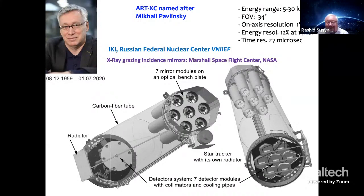This is the Russian device, ART-XC, named after Mikhail Pavlinsky. It was named after Mikhail because last year, practically one year ago, he left us due to illness. It's a pity because he was the real father of this device. I told you already that this was the first X-ray telescope with grazing incidence optics. You see here there are seven mirror modules on an optical bench plate. Each of them, these seven mirror systems, are seven independent X-ray telescopes. Here are seven detector modules in the focal plane.